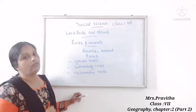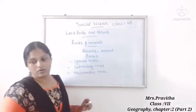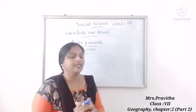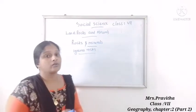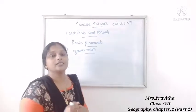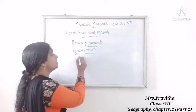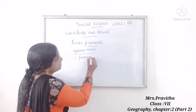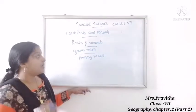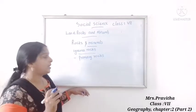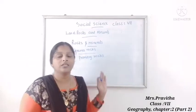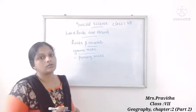We will discuss one by one. First, igneous rock. What is igneous rock? These rocks are hard rocks and this type of rocks is also known as primary rocks. So igneous rocks are also known as primary rocks. A question will come: which rock is known as primary rocks? Igneous rock. So how are these rocks formed?